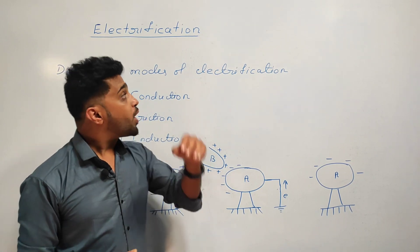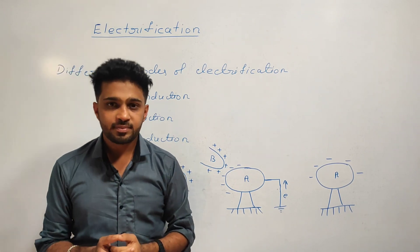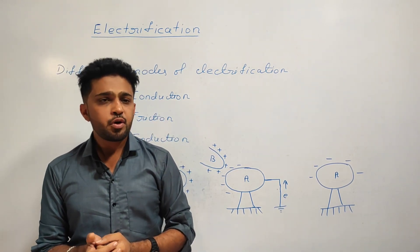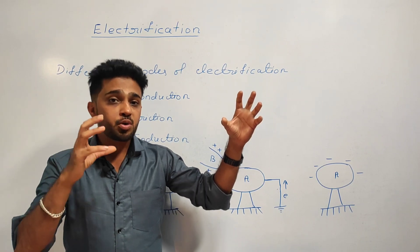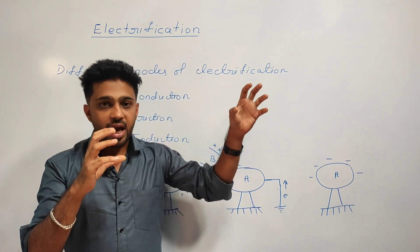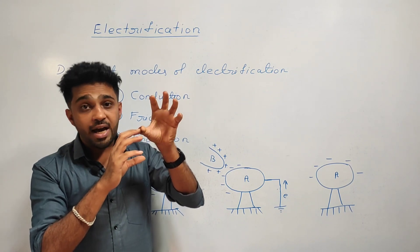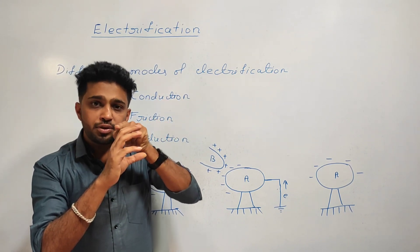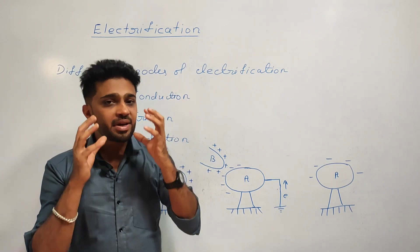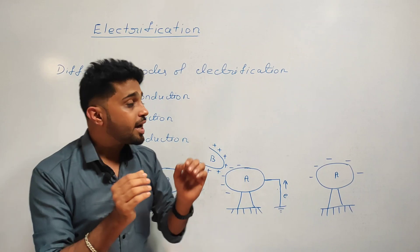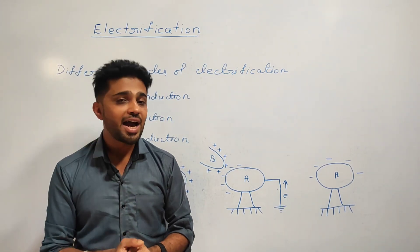What are the different modes of electrification? The first one is conduction. Here we have a charged conductor and a neutral conductor. The charged conductor touches the neutral conductor, and electrons are transferred from the charged conductor to the neutral conductor. This method is called charging by conduction.